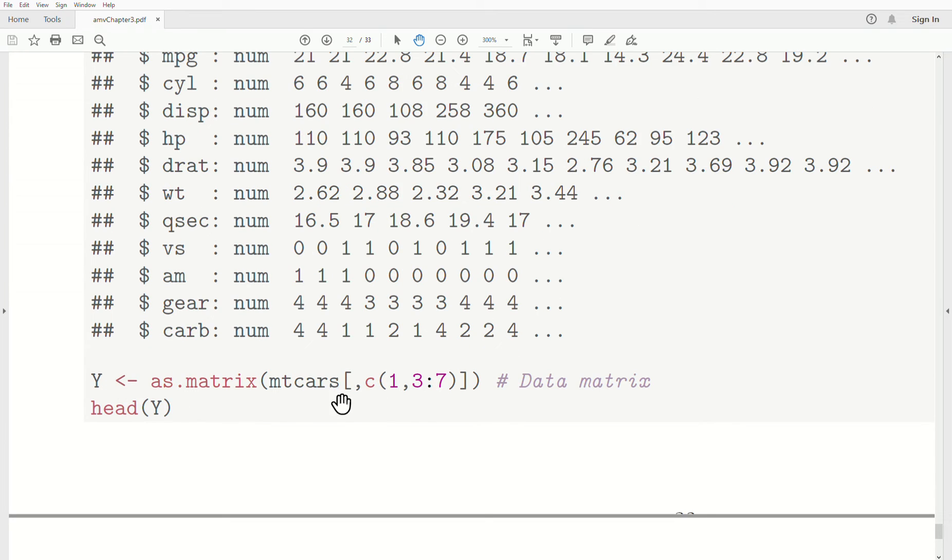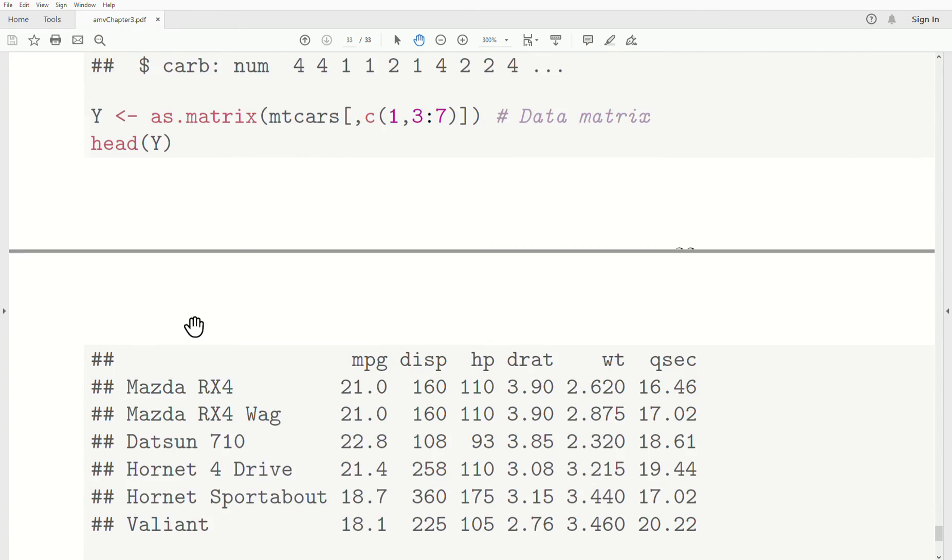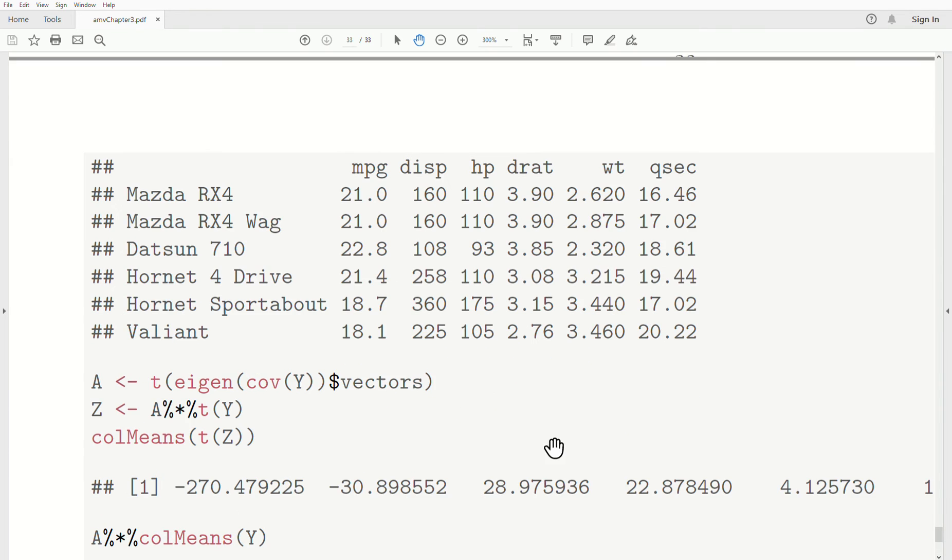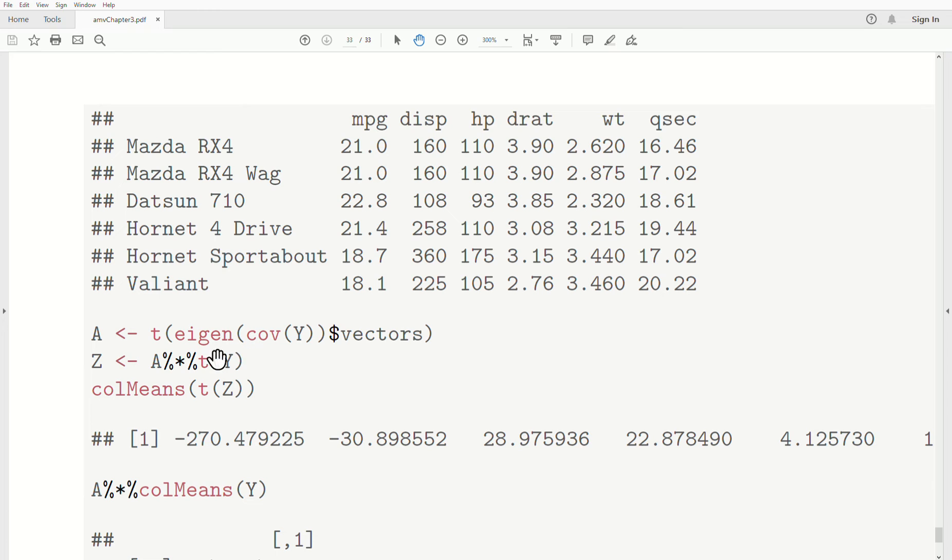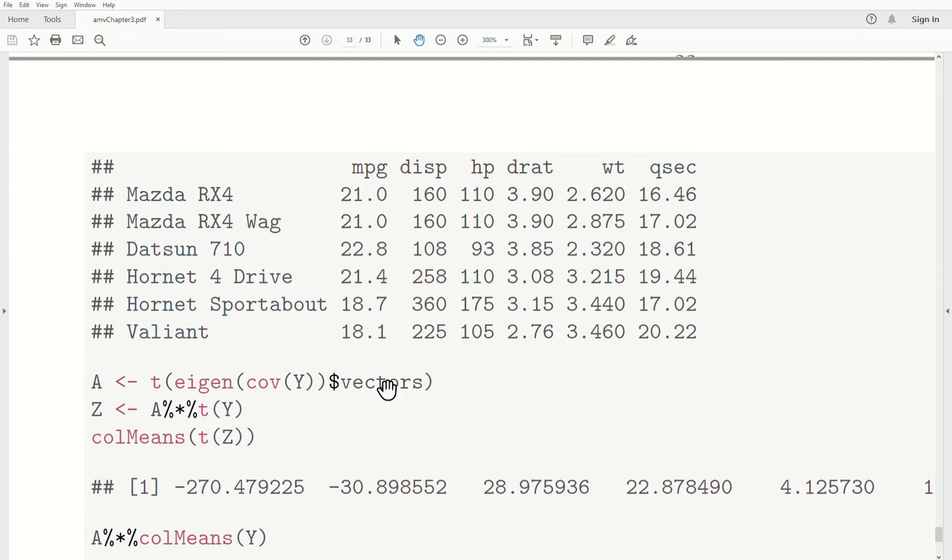Put them in a data matrix called Y. We need to do that because MT cars is a data frame, and when we do matrix multiplication, R has to think of it as a matrix. So we call it Y. Head looks at the first six rows of the data matrix or object. Now we're going to grab the eigenvectors of the covariance of Y. We take the transpose so we can, remember, the vectors are column vectors, but in the theory we looked at, we need them as row vectors. So we take the transpose of these eigenvectors, put in A. Then we create Z, which is A times transpose of Y.